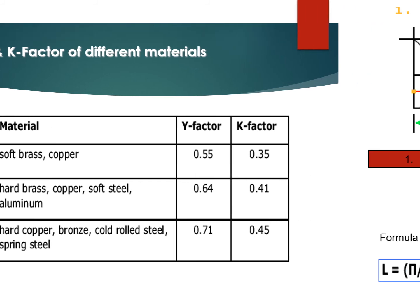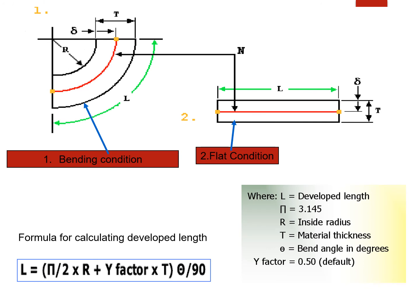Taking one example: this is a bent part with a 90-degree bend, where R is the inside radius. The flat length formula is: L = (π/2 × R + Y factor × T) × (bend angle / 90). Here T is the thickness. If you have a 45 or 60-degree bend angle, then that angle divided by 90 becomes the multiplication factor, and you will get the flat length.